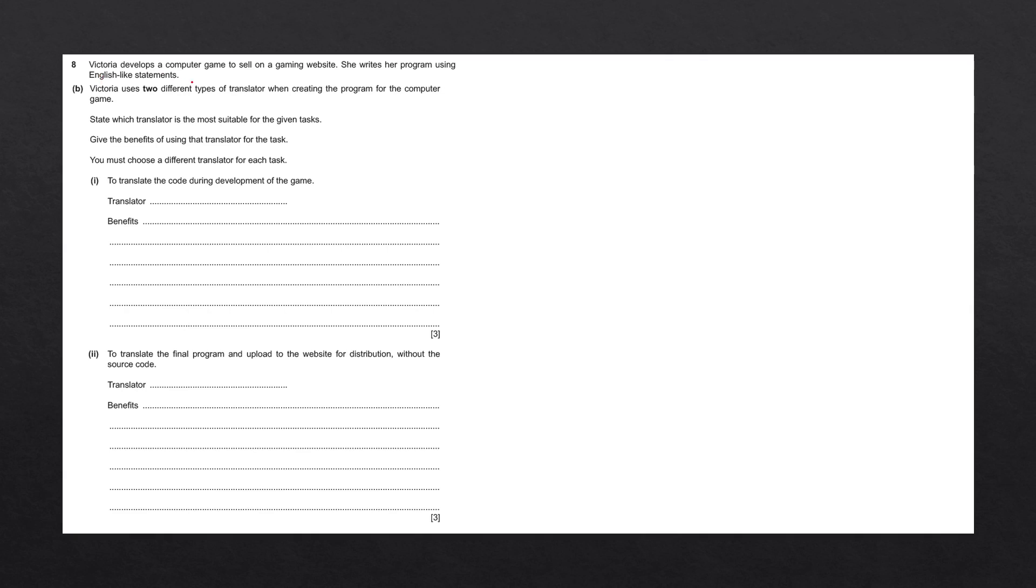Victoria develops a computer game to sell on a gaming website. She writes her program using English-like statements. Victoria uses two different types of translator when creating the program. State which translator is most suitable for the given tasks and the benefit of using that translator. You must choose a different translator for each task.